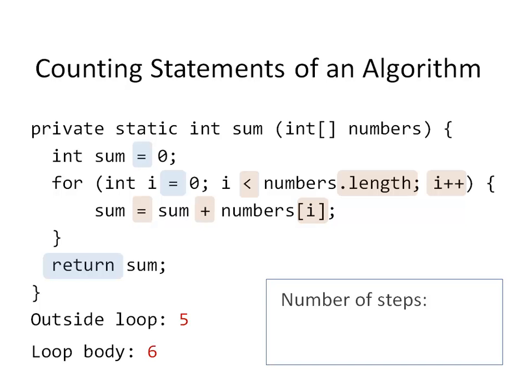Now, when I try to find out what is the number of steps in the whole algorithm, I need to know how many times is the loop executed. And I can see it right here. We're starting at 0, and the i is incrementing as long as it is less than numbers.length. That means we are going to execute the loop n times if my array has n elements. For each of the executions of the loop body, we are going to have 6 steps to execute. That means we are going to have all together 6n steps only in the for loop body, and then the additional 5 outside the loop. So 6n plus 5 is the number of steps.